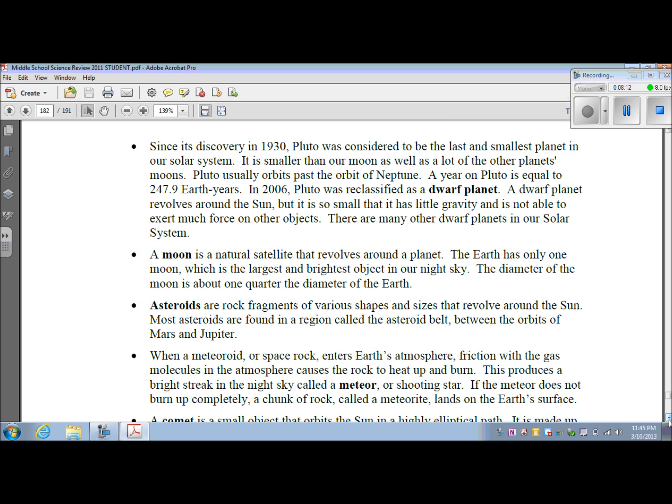A moon is a natural satellite that revolves around a planet. The Earth only has one moon, which is the largest and brightest object in our night sky. The diameter of the moon is about one-quarter the diameter of Earth.